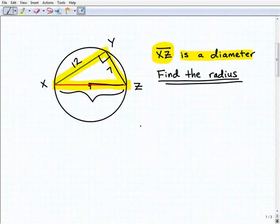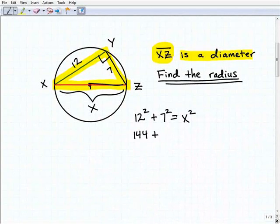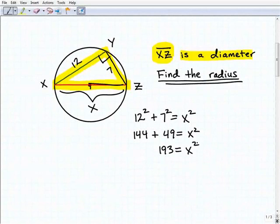Let's use the Pythagorean theorem to solve for the hypotenuse first. That would be 12 squared plus 7 squared equals x squared. Again, x will represent the hypotenuse XZ. This would be 144 plus 49 equals x squared, or 193 equals x squared. To solve for x, I'm going to take the square root of both sides, the square root of 193. Now at this point, the square root of 193 is the diameter. This is equal to the diameter of this circle.